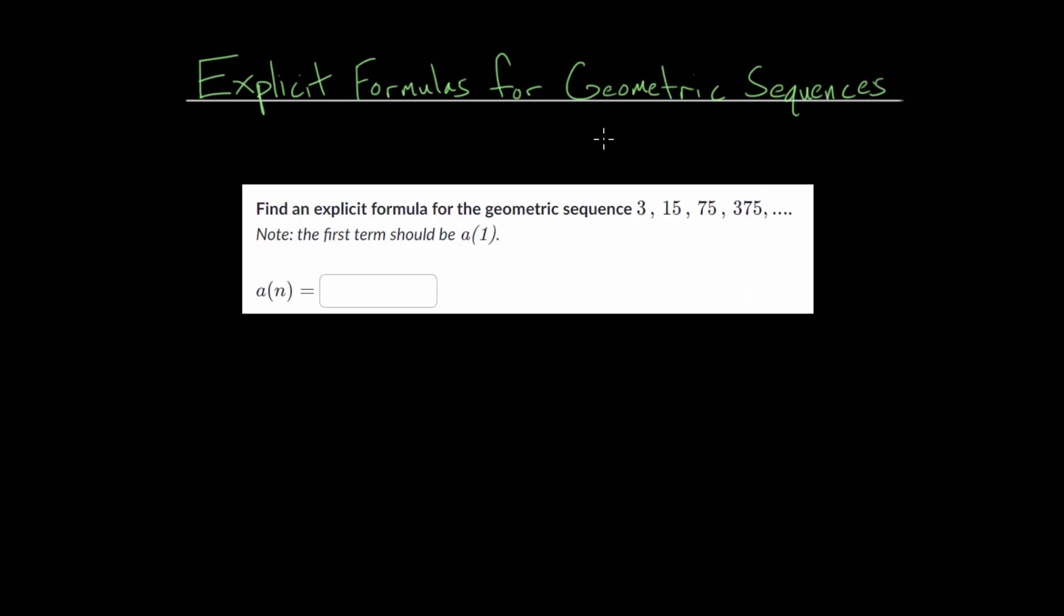So before we look at this example problem, let's consider what the general explicit formula is. So let's say we have some sequence a of n, where n is our term number. Then the explicit formula will be equal to the first term of that sequence, which we can call a of 1.